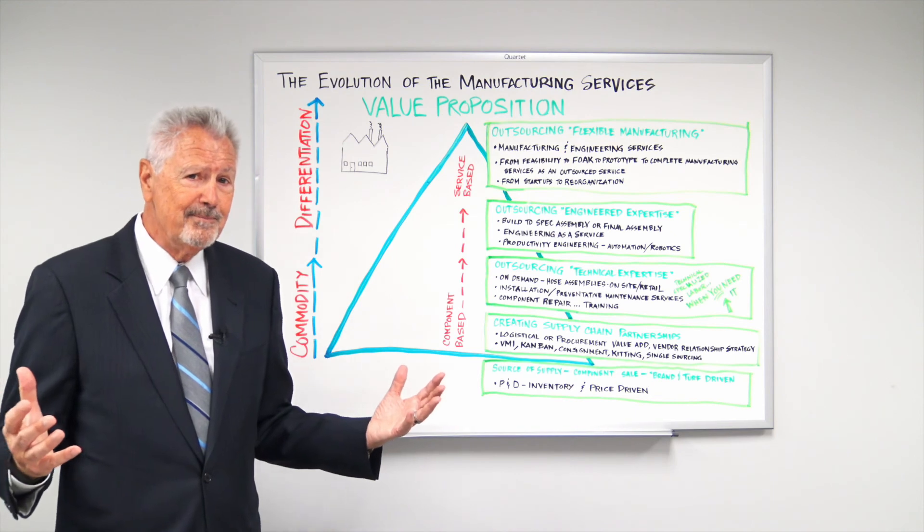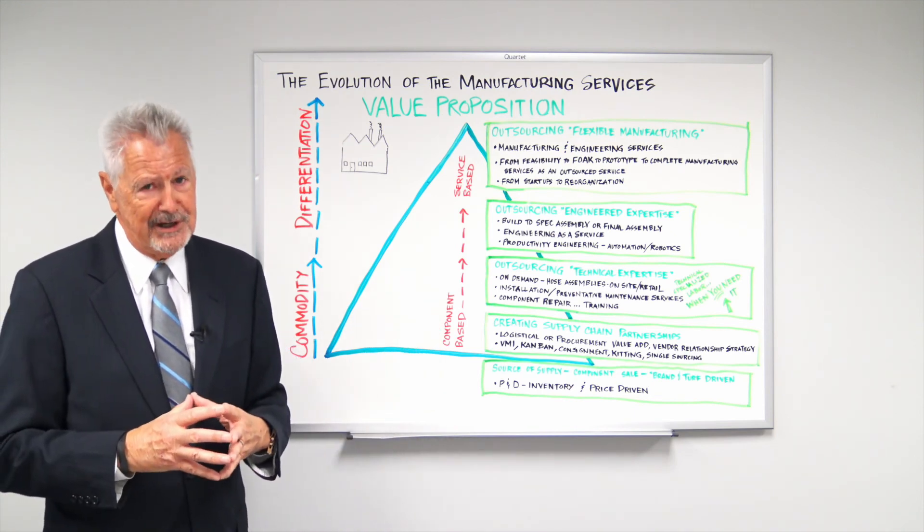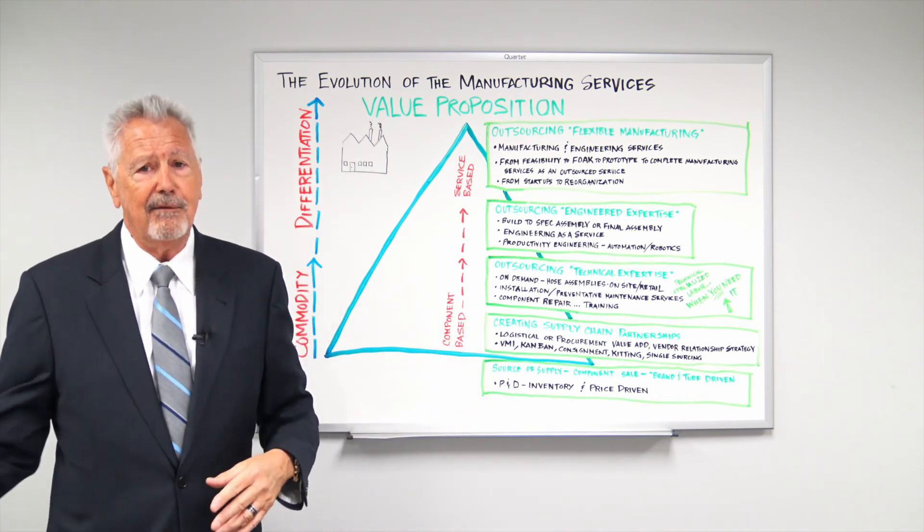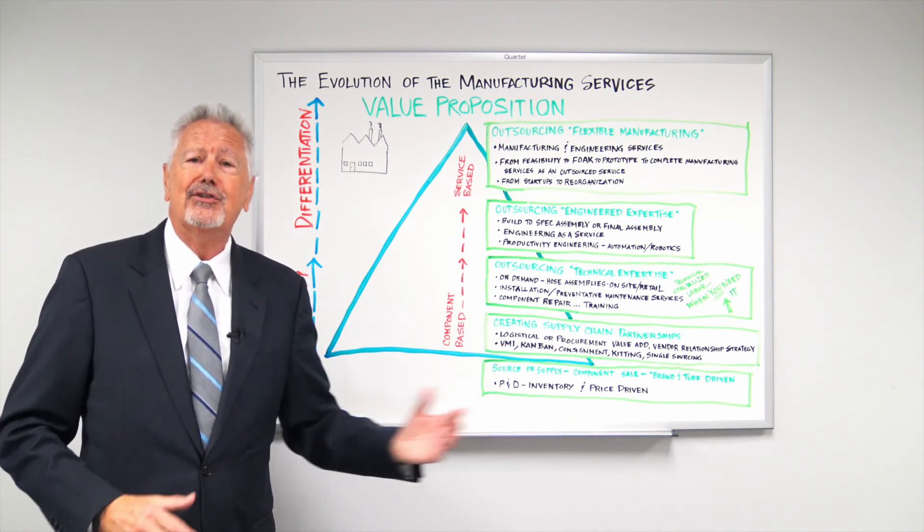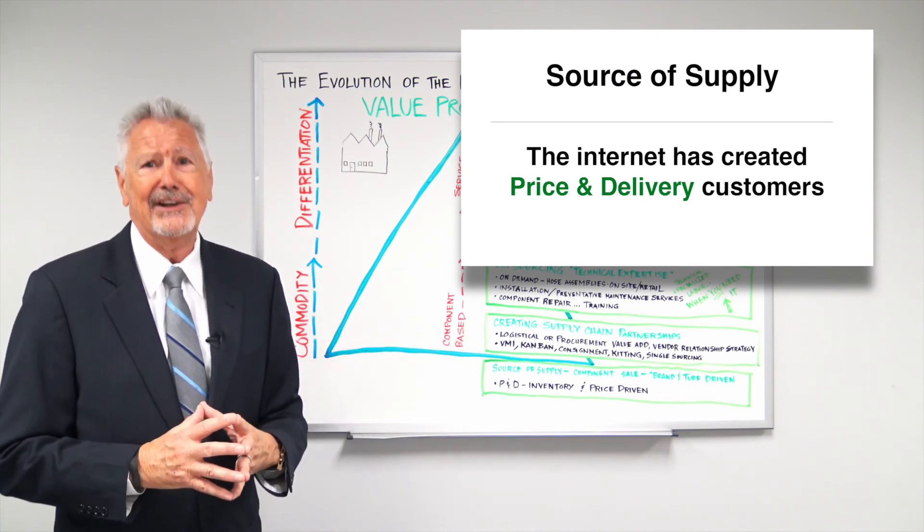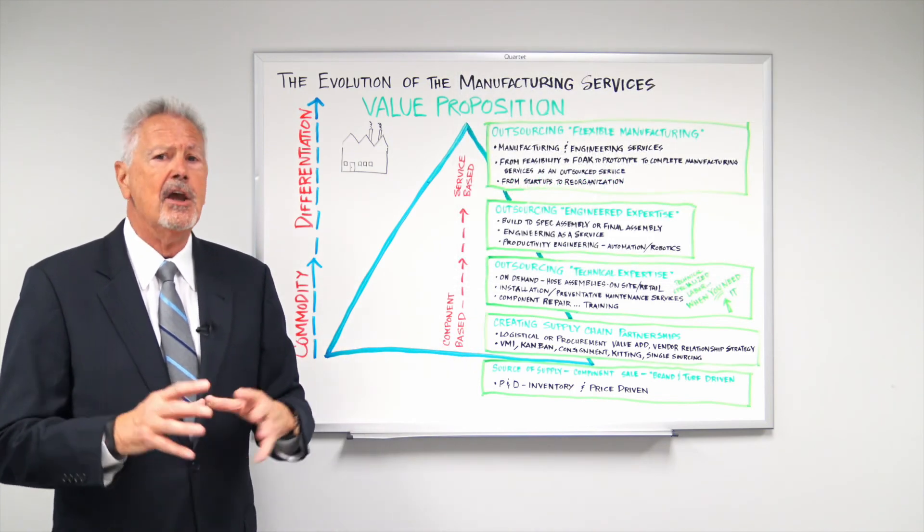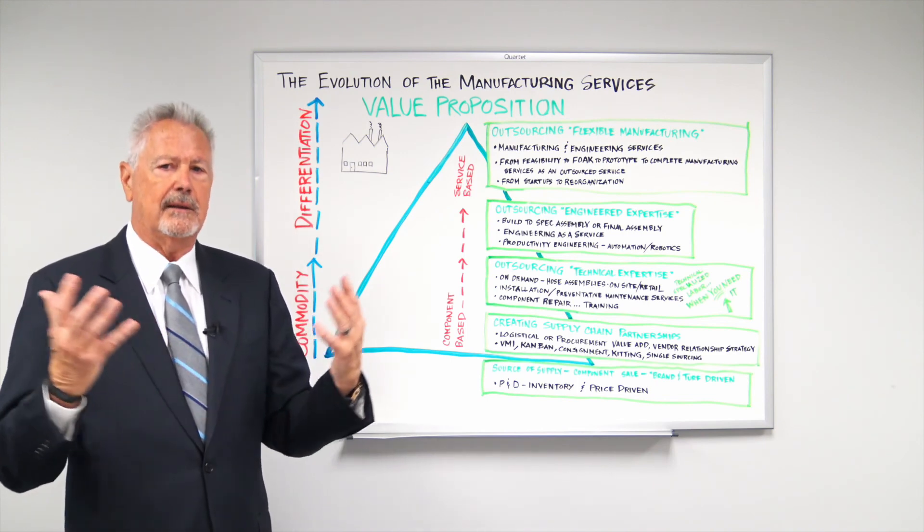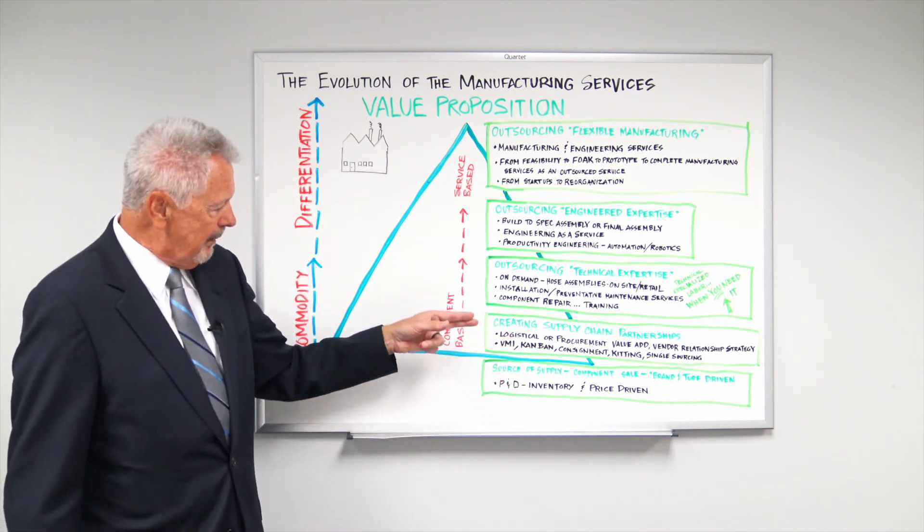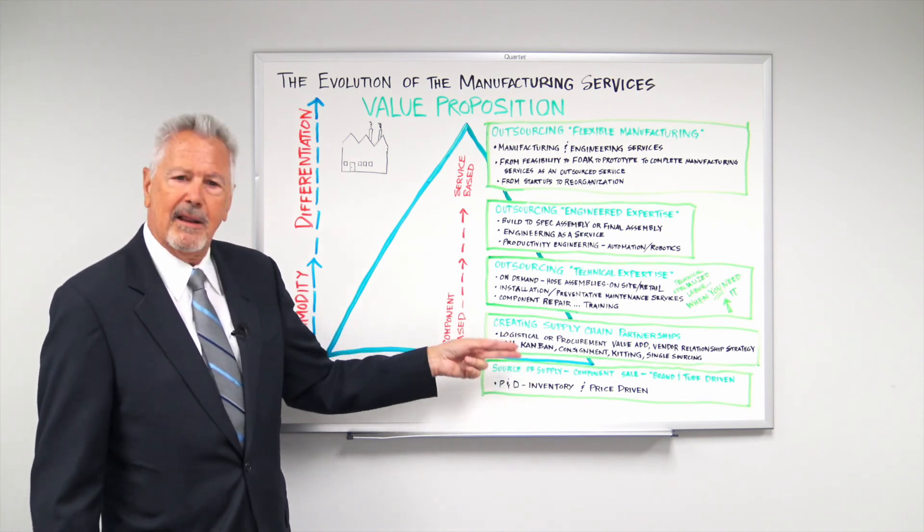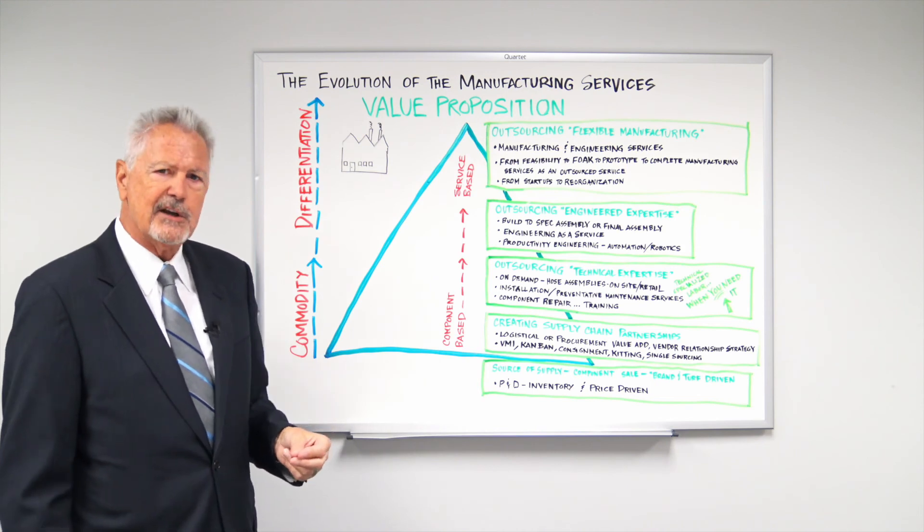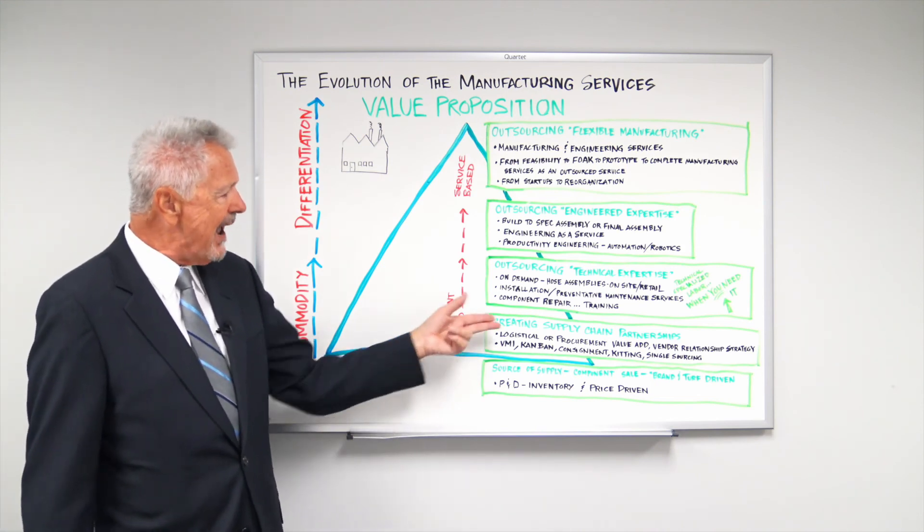Well, guess what, folks? We all know what changed. What changed was the internet. So today, the source of supply can be in California and can still be on the East Coast in a day or two. And if you're competing with Amazon, it's there the same day or the next day. So things have changed dramatically with logistics. So this particular business model and value proposition is not really very helpful in today's manufacturing service business.